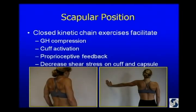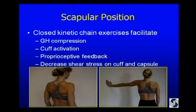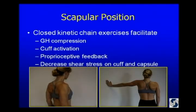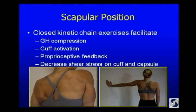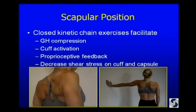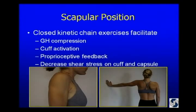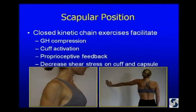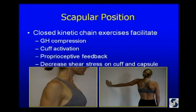We want patients doing scapular clocks — open chain with the arm at the side, there's not a lot of stress. The patient needs to be able to identify where on the clock they are. One of the first things we do on day one — I start this in the office before sending the patient to the therapist — is I want the patient to find their scapula and know where it is in space. Then we can do closed chain scapular work just by compressing: if the hand is against anything — a table, a wall — it's a closed chain exercise because the end of the limb is not moving.